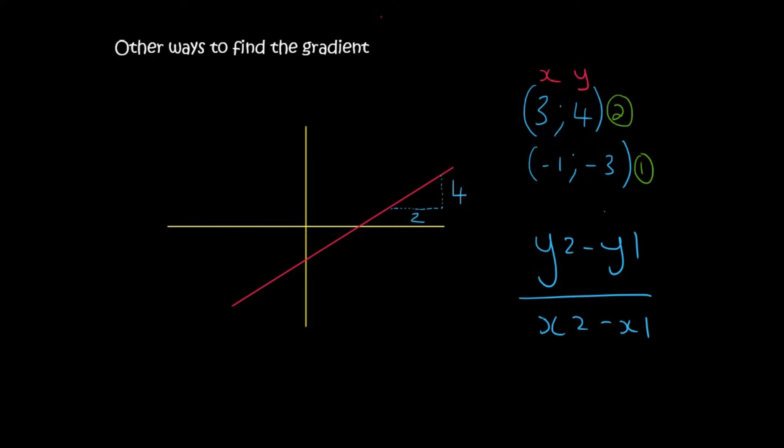So the y value of point number 2 is 4, then we say minus, then the y value of point number 1 is minus 3. The x value of point number 2 is 3, and then the x value of point number 1 is minus 1. You could then go type this in on the calculator and you would get 7 over 4.